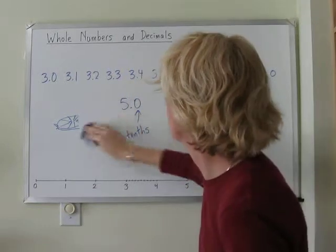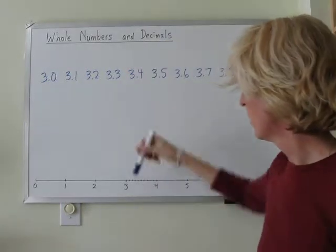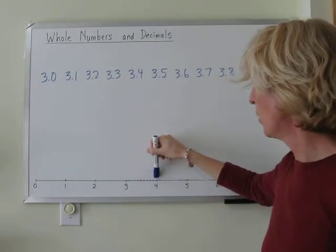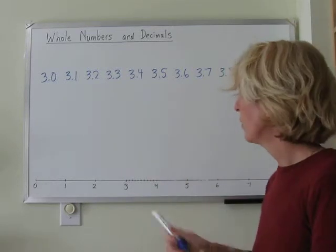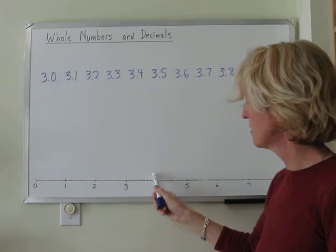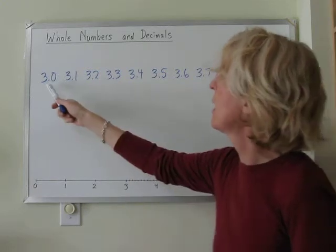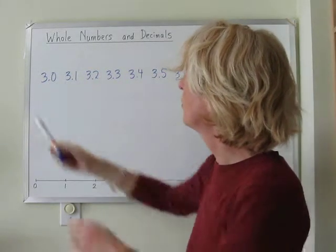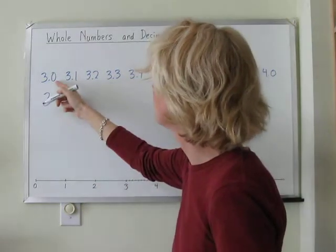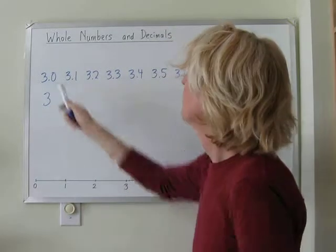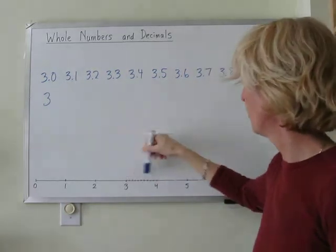So for example, if we look at the number line between three and four, and it is divided into ten equal parts, we need all ten pieces to make up the one whole number from three up to four. And we write that like this. We've got our whole number of three, which we would normally just write like that. And we're showing one decimal position.